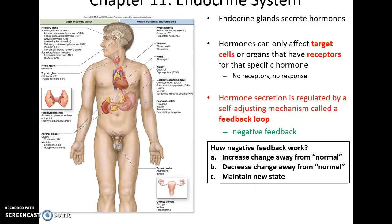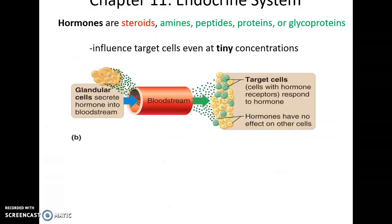Endocrine cells secrete hormones targeting cells and receptors. The hormone secretion is regulated by a self-adjusting mechanism — the negative feedback loop. As things return to normal, we are turning it off, and as it moves away from normal, we're turning it on.